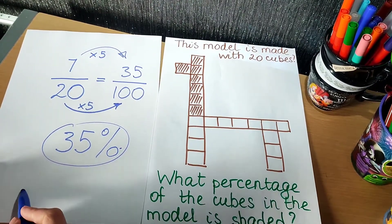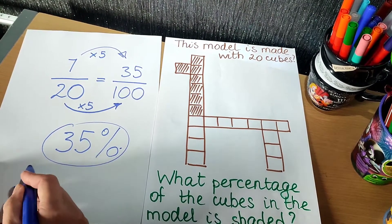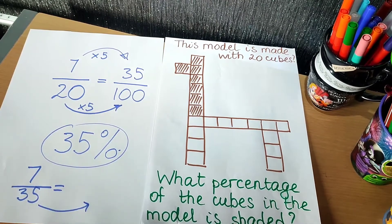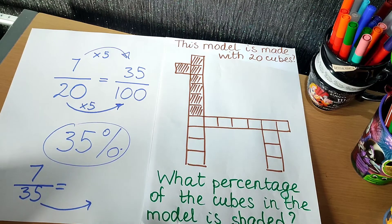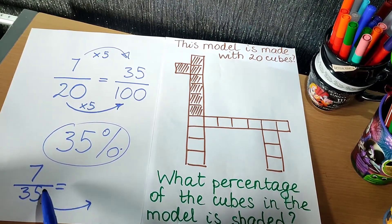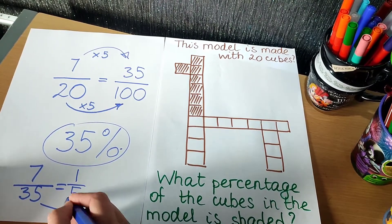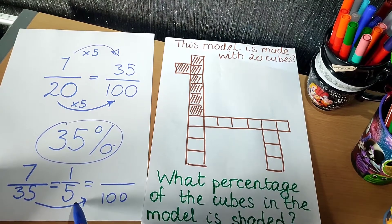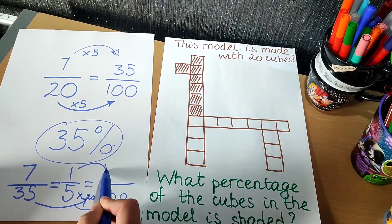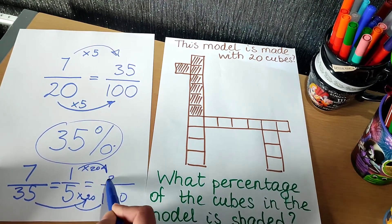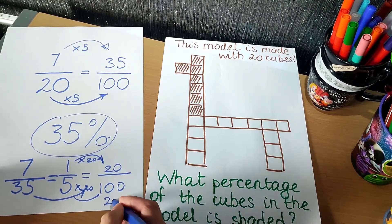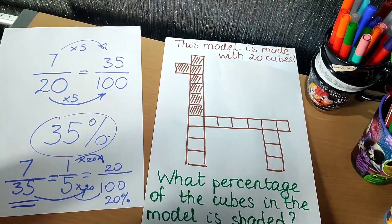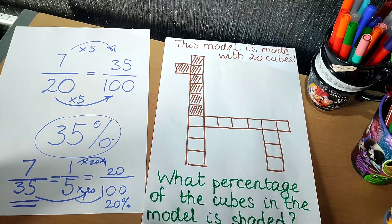The problem might be when your denominator can't be easily turned into a hundred. You'll have to do something with it first. For example, with a fraction like seven thirty-fifths, you would have to simplify it first — divide the top and bottom by seven to get one fifth. Then multiply five by 20 to get a hundred, and do exactly the same to the numerator to get 20 hundredths, or 20%. Sometimes you have to do some other manipulations first.